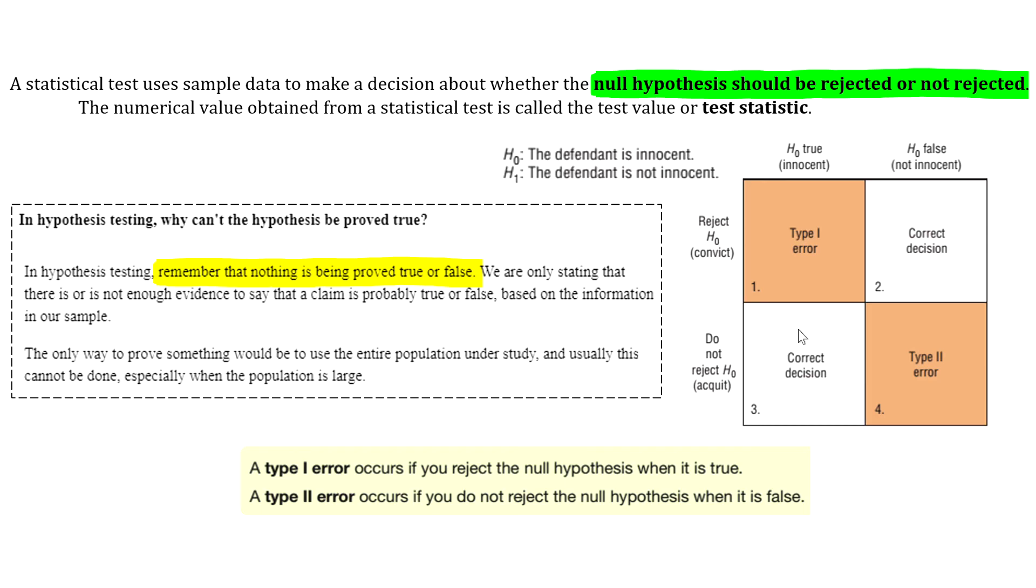The fourth outcome is that the defendant is guilty, and they are acquitted. I think we'd all agree that is not a correct decision, and that's an example of a Type 2 error. A Type 2 error occurs if you do not reject the null hypothesis when it is false.